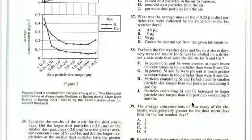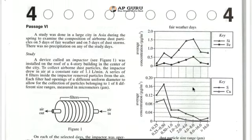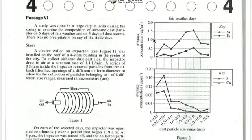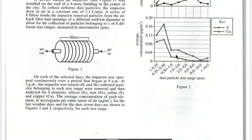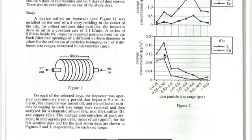And remember that we have to find a trend that is true for both. So let's look at fair weather days and we can see clearly that iron and silicon have concentrations of greater than 0 and more than 0.5 at a lot of points. Whereas sulfur and copper have very low concentrations. Their concentrations are always lower than 0.16.